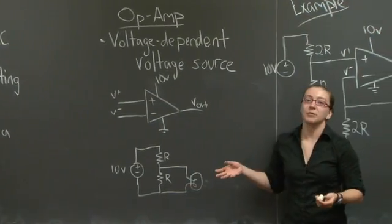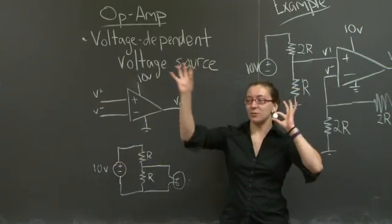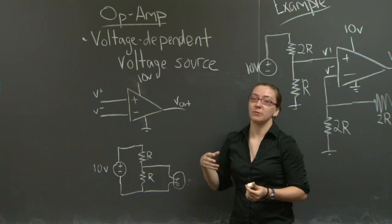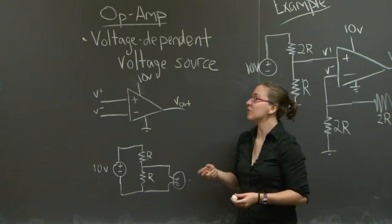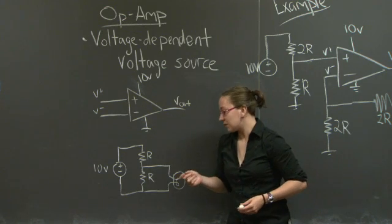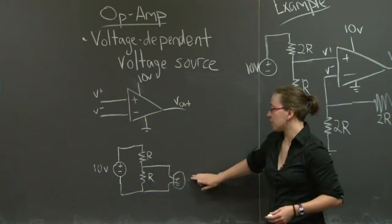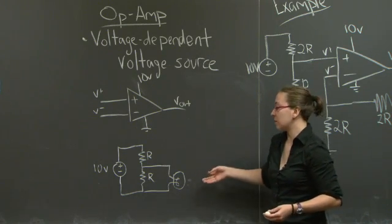So, first of all, what is an operational amplifier? Well, an operational amplifier is a giant web of transistors, but what an operational amplifier does is act as a voltage-dependent voltage source. It can effectively sample voltages from an existing circuit and then use them to power some other object, for instance, a light bulb.